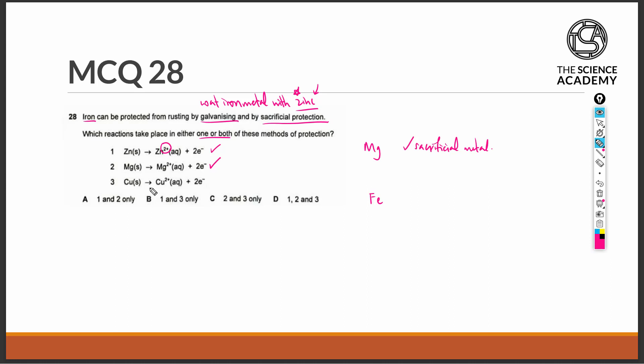Statement 3 states that copper is being oxidized into copper 2 plus ions. We know that copper is actually below iron in the reactivity series. So copper cannot act as a sacrificial metal and oxidize in place of iron because the more reactive metal should oxidize instead. Therefore, copper will not be oxidized in sacrificial protection of iron and only 1 and 2 are the correct answers.